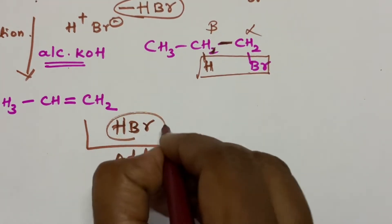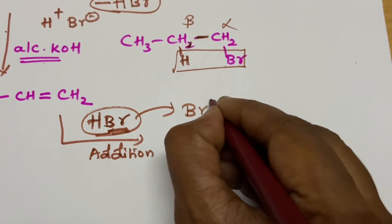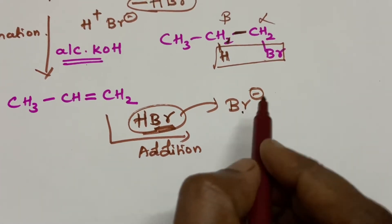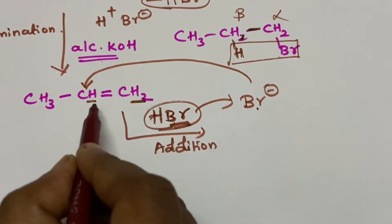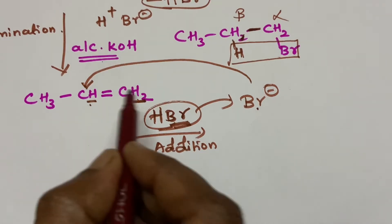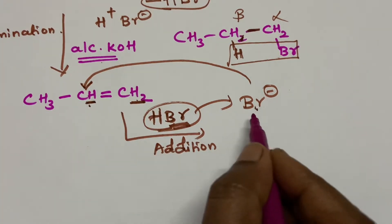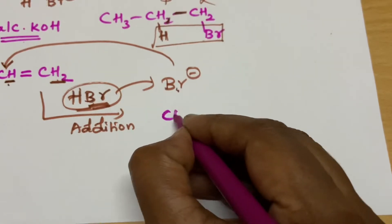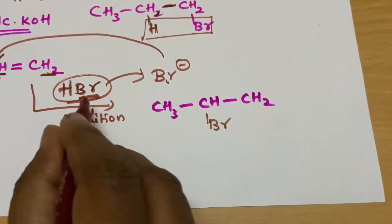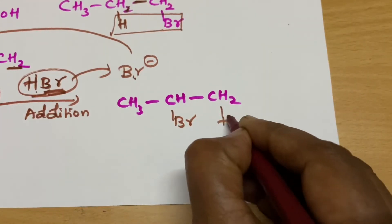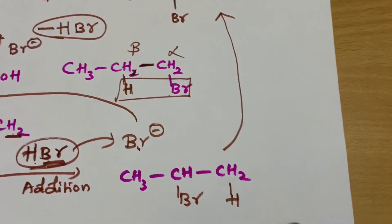Markovnikov's rule says: if you add any reagent, the nucleophilic part of the reagent — which is Br minus here — will go to the carbon which is having the less number of hydrogens. So the nucleophilic part Br will add to the carbon with fewer hydrogens, and hydrogen will add to the other carbon. This gives you your 2-bromopropane.